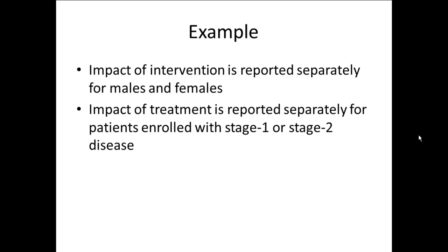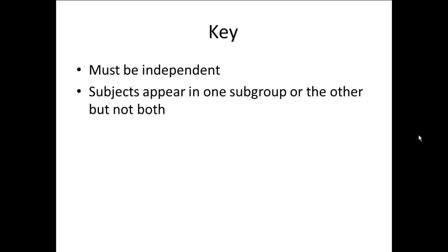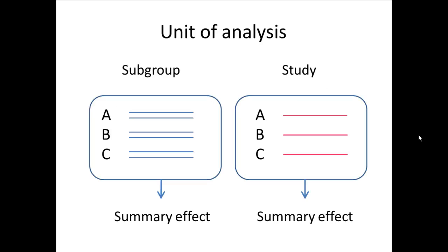Or we might have a study that reports the impact of a drug — treated versus control — and reports that separately for patients that had stage 1 illness and separately for patients that had stage 2 illness. The critical thing is that the subgroups are independent. People appear in one subgroup or the other, but not both. People are either males or females, or they enter the study with stage 1 or stage 2 illness. That is a separate case, and we will be dealing with that in a separate video.